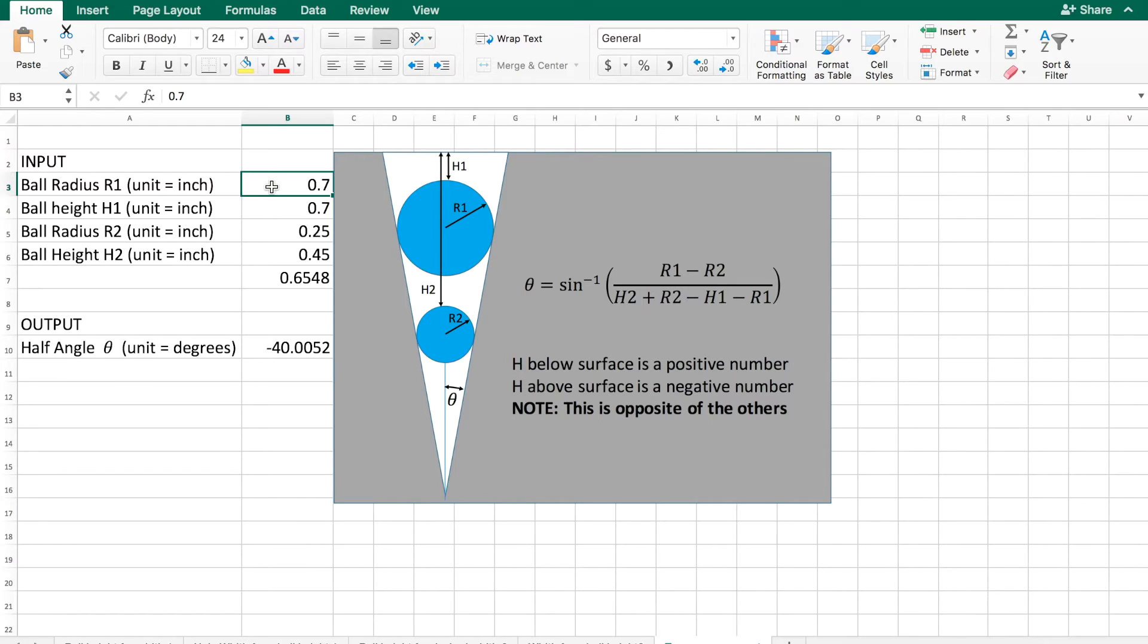Ball radius one was 0.2811. Ball height one was 0.001. Ball radius two was 0.250. And ball height two was 0.581. And if you remember, we were shooting for 3.25. 3.248. I don't know why I have that there. Let me delete that. 3.248. So that's 3.25 degrees. I accurately cut that. So that's pretty good.